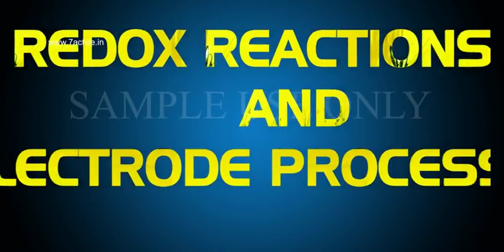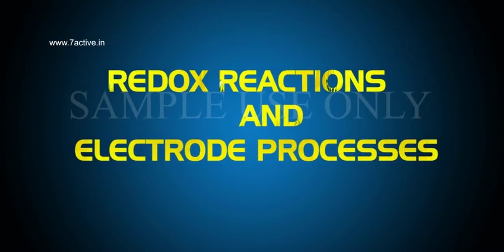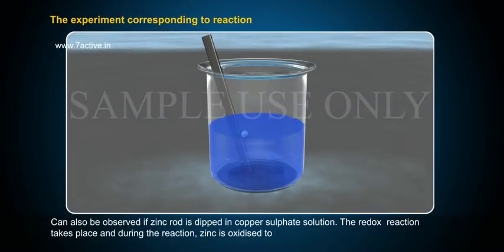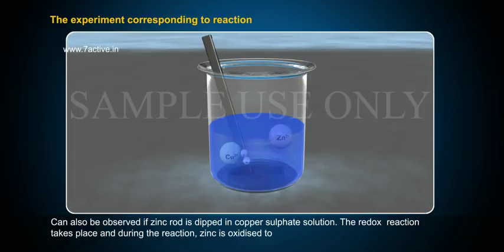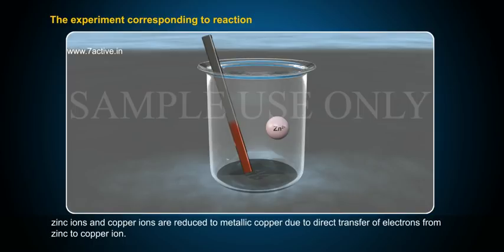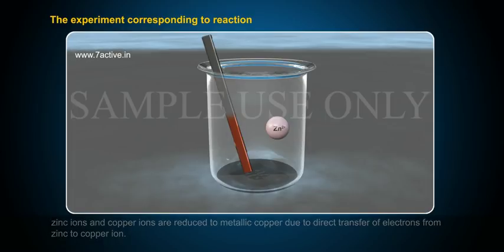The experiment can also be observed if a zinc rod is dipped in copper sulphate solution. The redox reaction takes place, and during the reaction, zinc is oxidized to zinc ions and copper ions are reduced to metallic copper due to direct transfer of electrons from zinc to copper ions.